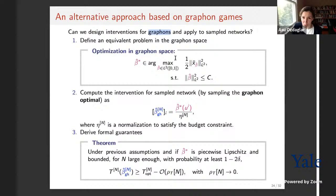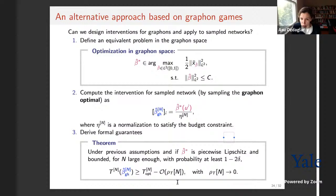Suppose we can solve the graphon intervention problem to obtain an optimal function β̂*(·). We then sample the intervention at the n points u_1,...,u_n used to generate the network, and apply normalization to satisfy the budget constraint. Similar to the equilibrium approximation result, we can show that this sampled graphon intervention achieves approximately optimal welfare, with an approximation factor that goes to zero as n → ∞.